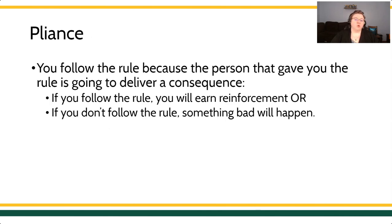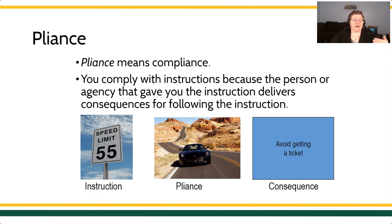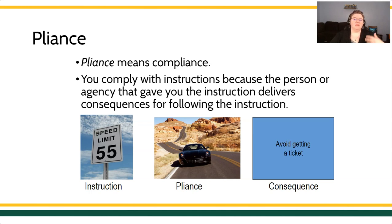Pliance is the way we learn to follow rules because the person who gave us that rule — the person who describes that contingency for us — is also going to be the one who delivers the consequence for that behavior. You can remember this as being short for compliance. If you follow the rule, you earn the reinforcer. If you don't follow the rule, either you don't earn the reinforcer or something bad will happen. An example: I follow the speed limit of 55, because if I don't, I'll get a ticket. So this verbal behavior 'drive 55 or less' comes to control my behavior — it predicts the consequences that are available.